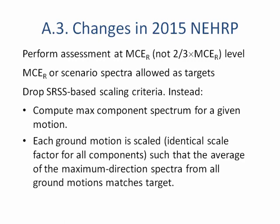Under the 2015 NEHRP proposals, you'll drop the SRSS scaling criteria. Instead, you'll compute the maximum component spectrum for a given direction, and each ground motion is scaled — identically for all components — such that the average of the maximum direction spectrum from all ground motions matches the target. They are requiring a minimum of 11 ground motion pairs. This means you're designing for spectral values much higher than even the MCER. I think when we brought in maximum direction, it was wrong, and now we're not correcting it — we're compounding it. This may kill performance-based earthquake engineering design.